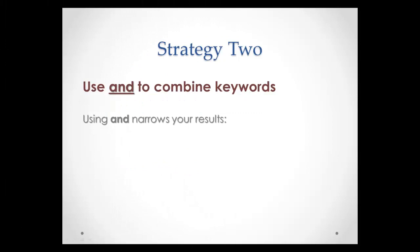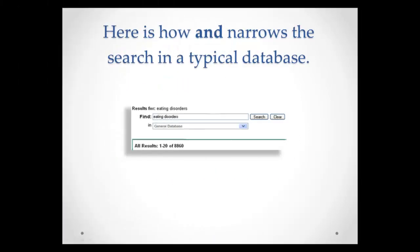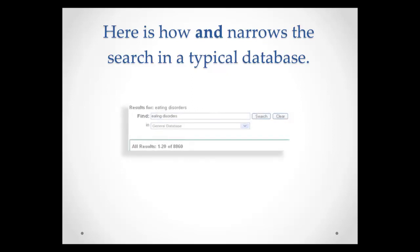Strategy 2 involves using AND to combine keywords. Using AND narrows your search results. For example, you could search using eating disorders AND relapse AND treatment. By connecting keywords with AND, you get fewer but more focused results.